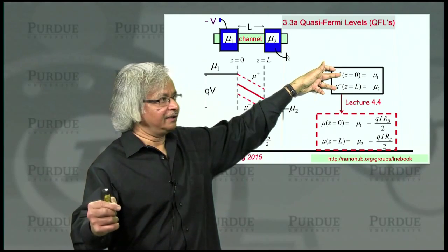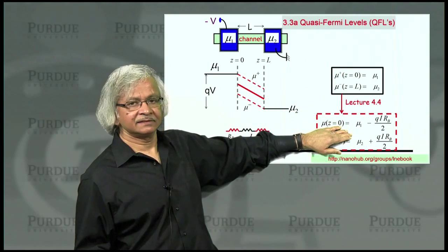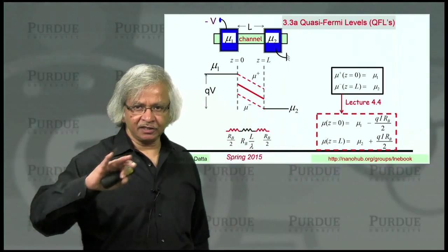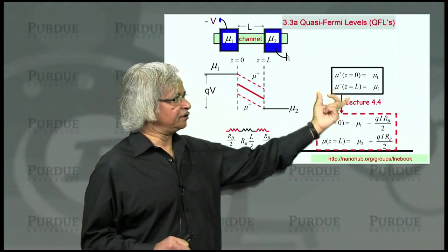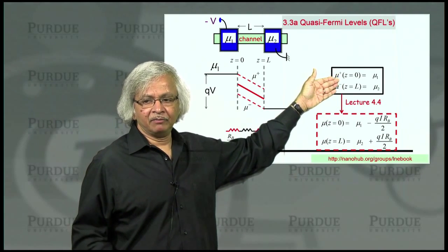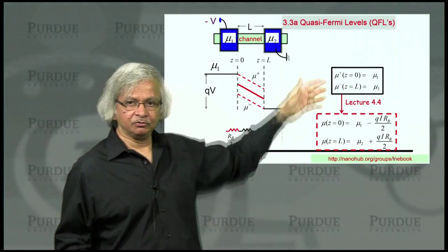What we derived in the last lecture was the appropriate boundary condition for this average. In this lecture we'll try to obtain the correct boundary conditions for these two quasi-Fermi levels. Then in the coming lecture we'll connect it up, showing that this implies this.